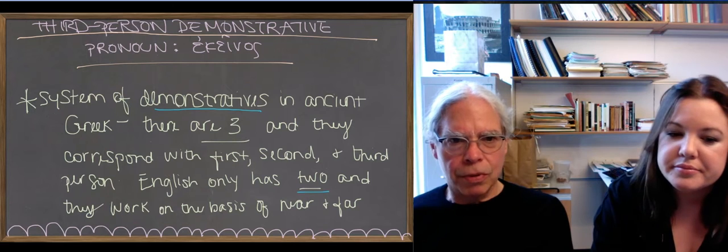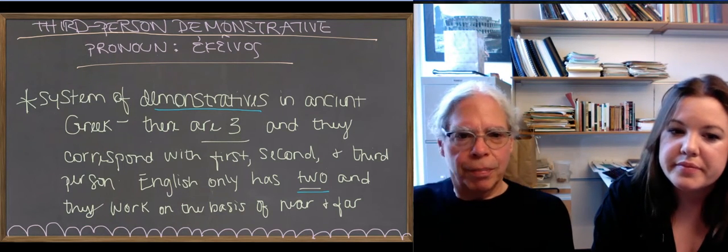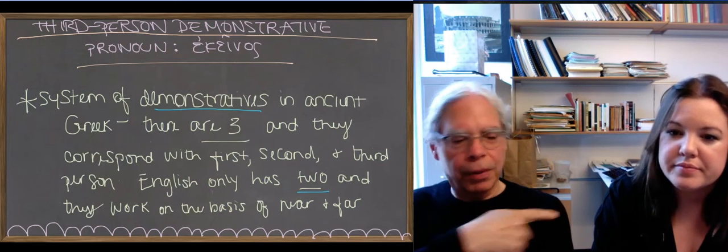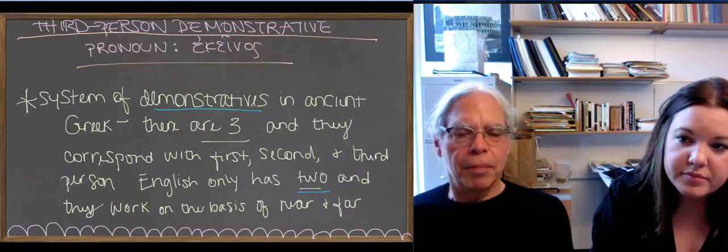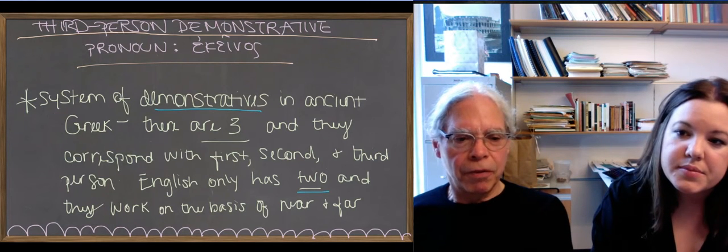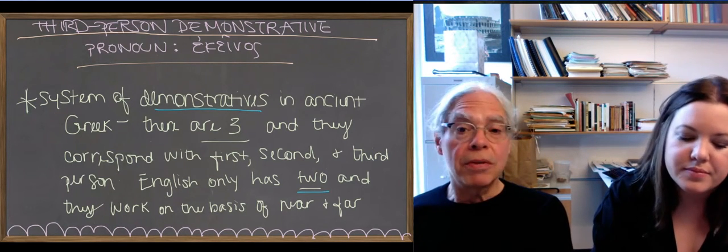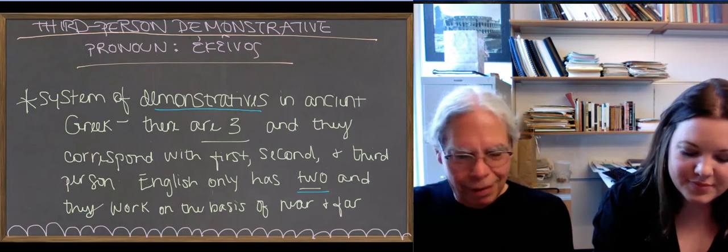So the one that they introduce you to here is the third person one, the one that belongs to somebody else, not Blesi or I. And that's akeinos. It derives from the adverb ekei, which means there, not here, but there.